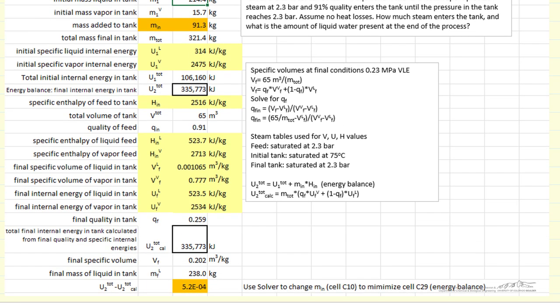And then I end up solving these equations by calculating two sides of the energy balance. One, the initial internal energy total, U1 total. And then the final internal energy, which is the initial internal energy, plus the mass flowing in times that enthalpy per kilogram. So that's essentially U2 total, the right side of the equation in energy balance. The left side then is in terms of the quality and the specific internal energies at 2.3 bar.